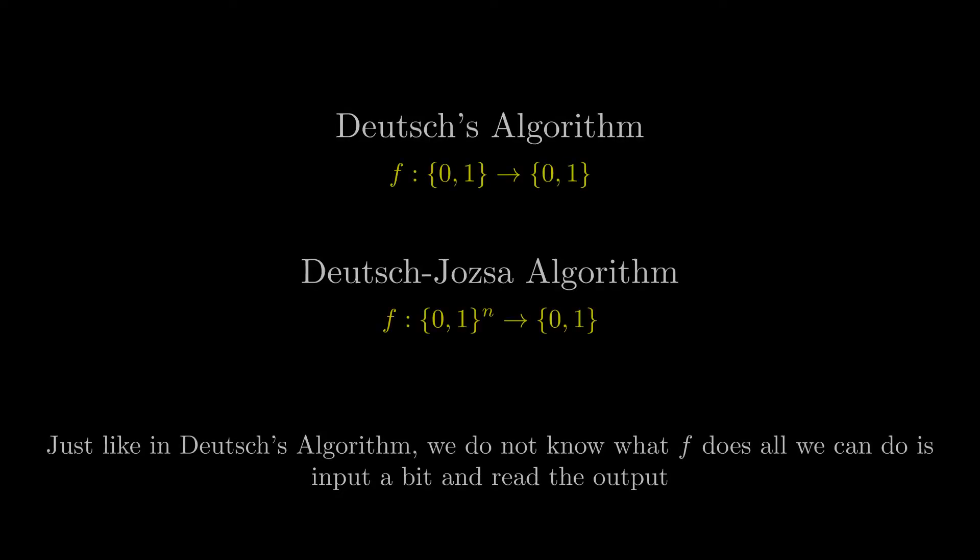The Deutsch-Jozsa algorithm concerns itself with the same problem as Deutsch's algorithm of finding out if a function is constant or balanced, but this algorithm is a general case that can accept any number of bits as input.